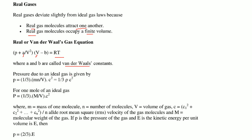The pressure due to an ideal gas is given by P = (1/3)(MN/V)C², which equals (1/3)ρC². For one mole of an ideal gas, P = (1/3)(M/V)C², where M is the mass of one molecule, N is the number of molecules, V is the volume of the gas, and C is the root mean square speed: C = √((C₁² + C₂² + ... + Cₙ²)/N). The capital M is the molecular weight of the gas. If E is the kinetic energy per unit volume, then P = (2/3)E.